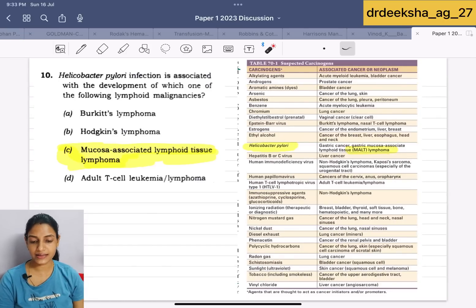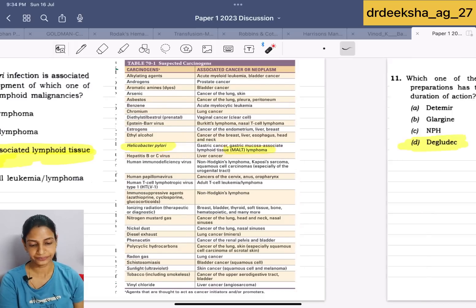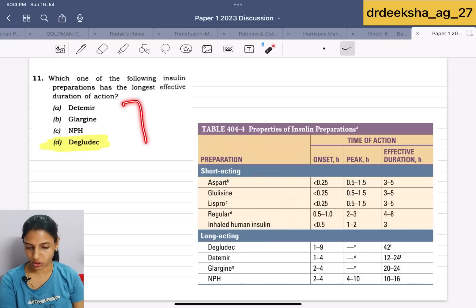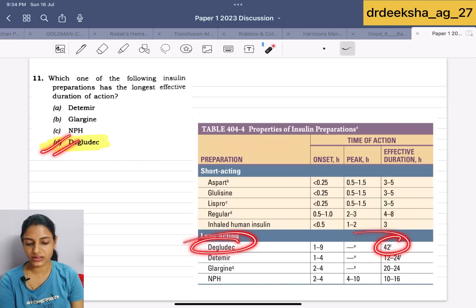Next question they are saying is, Helicobacter pylori infection is associated with the development of which of the following lymphoid malignancy? We all know it is associated with MALT lymphoma. These are the suspected carcinogens and the associated cancer table given in the Harrison. They have asked helicobacter, the answer is MALT lymphoma. Which one of the following insulin preparation, every year it is asked, longest effective duration of action. In the insulin, these were the short acting. If we look at the options, all four long acting were given and the longest effective duration was of degludec. Answer for this is degludec.